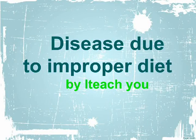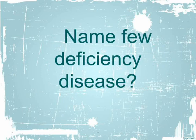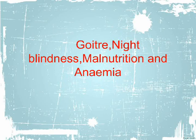Disease due to improper diet. Name a few deficiency diseases: Goiter, Night Blindness, Malnutrition, and Anemia.